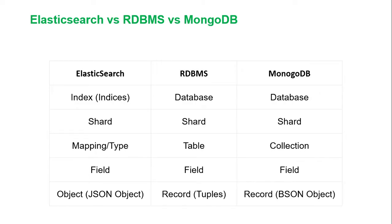Let's see the comparison between Elasticsearch, RDBMS and MongoDB. In Elasticsearch, we have indexes as the database equivalent. In RDBMS and MongoDB, it is called a database. Sharding is provided in all three, meaning horizontal scaling and clustering. Regarding mapping type: in Elasticsearch, tables are called mapping types; in RDBMS they are called tables; and in MongoDB they are called collections.